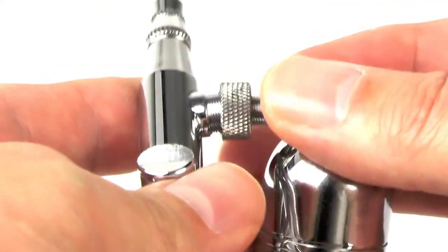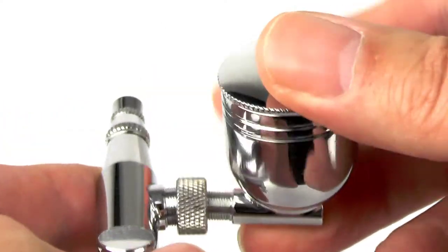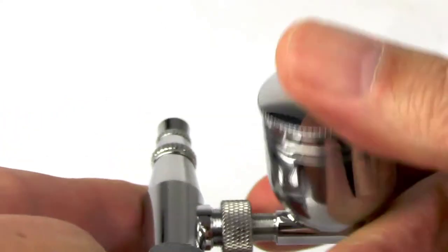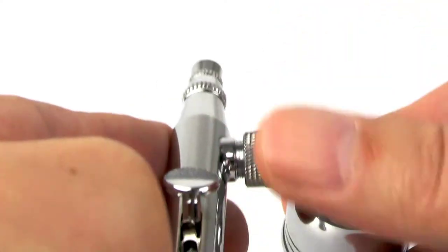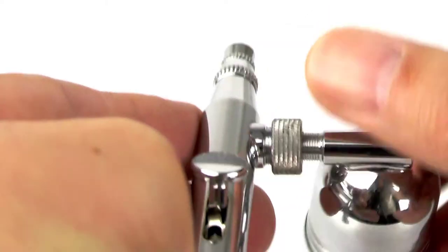Insert the side feed arm into the airbrush and turn in a clockwise direction. This will cause the thread on the side feed arm to catch and screw in on the internal thread.